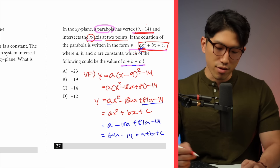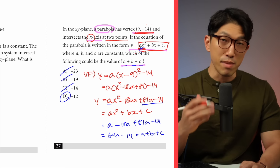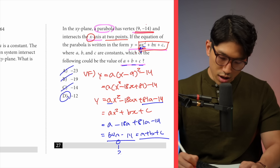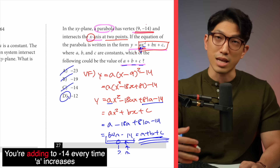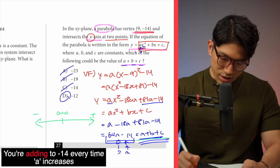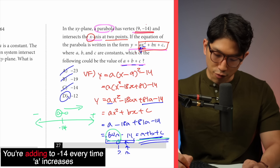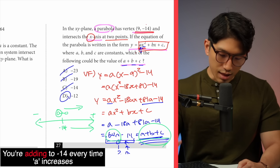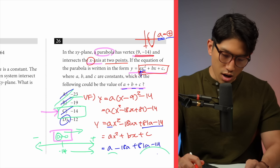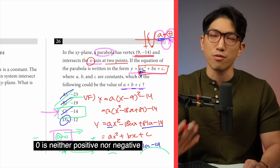Based on that, how do we find the correct answer? It can't be A, B, or C — it can only be D. We know a plus b plus c equals 64a minus 14, and our a value has to be positive. When a equals zero, a plus b plus c equals minus 14. As a gets bigger, we add 64 each time, so the result gets bigger. That means any number smaller than minus 14 — like minus 23 or minus 19 — won't work. And it can't be minus 14 either, because that requires a to equal zero, and zero is neither positive nor negative. So the answer is choice D.